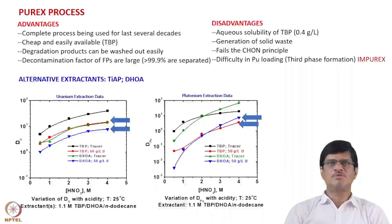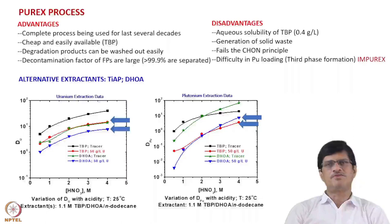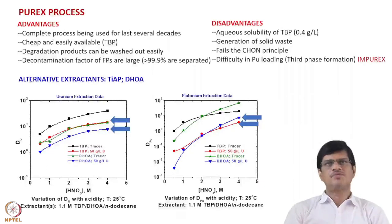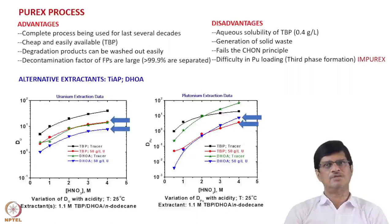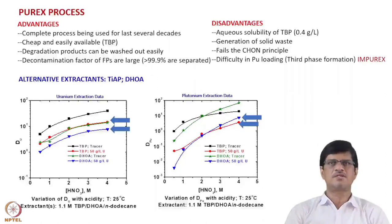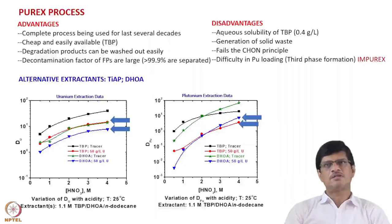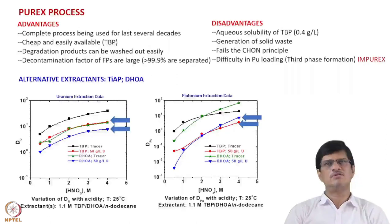There are some disadvantages of the PUREX process: the aqueous solubility of TBP is significant at 0.4 g/L, meaning TBP goes into the aqueous phase. There is also generation of solid waste from spent solvent containing phosphates. TBP fails the CHON principle of green extractants — which requires only carbon, hydrogen, oxygen, and nitrogen — because it contains phosphorus. Additionally, there is difficulty in plutonium loading for fast reactor spent fuel where plutonium concentration is much higher, leading to third phase formation.